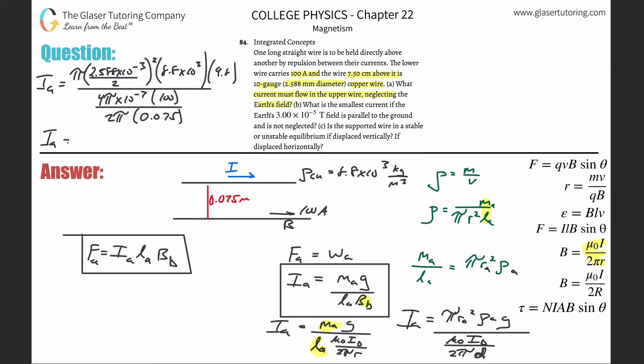Completing that calculation, we get a value of approximately 1,700 amps. That's the current that must flow in the top wire in order for it to levitate.